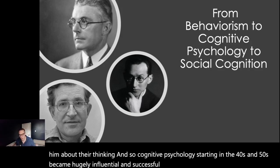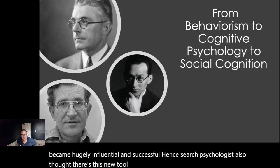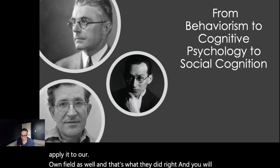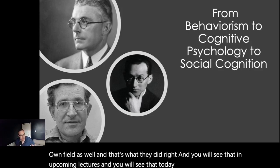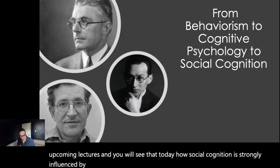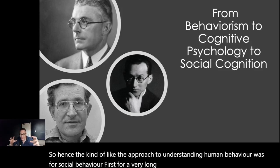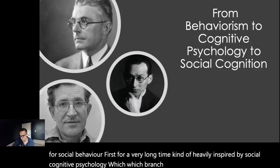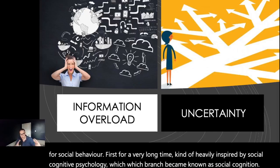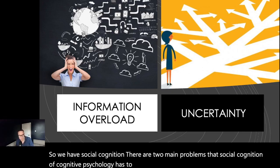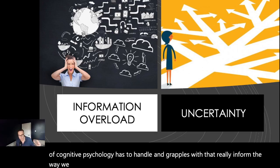Social psychologists thought: here's this new tool for analyzing social behavior — maybe we should apply it to our own field. And that's what they did. You will see in the upcoming lectures how social cognition is strongly influenced by cognitive psychology. The approach to understanding social behavior was for a very long time heavily inspired by cognitive psychology, and that branch became known as social cognition.